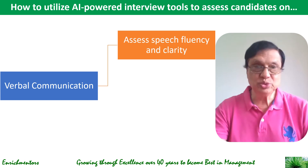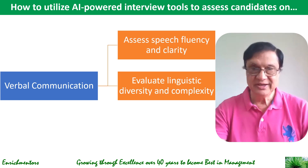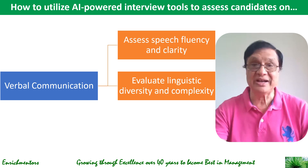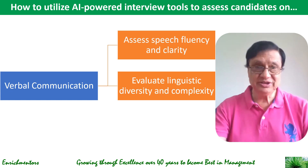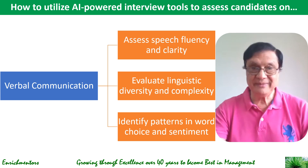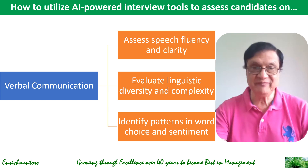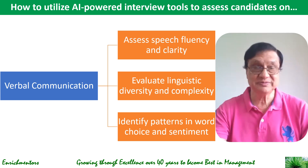The second way is to evaluate linguistic diversity and complexity. AI can analyze a candidate's vocabulary and sentence structure to assess their linguistic diversity and complexity, helping identify candidates who have a strong command of the language and can communicate effectively in a variety of situations. Third, AI can identify patterns in word choice and sentiments to assess their overall communication style, helping identify candidates who are persuasive, empathetic, and able to tailor their communication to different audiences — especially important in sales.